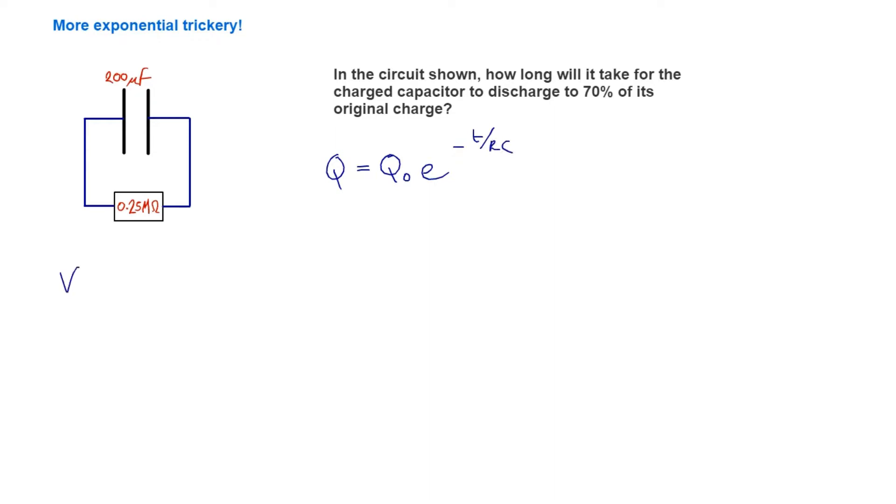If it was potential difference, I would choose V = V₀e^(-t/RC). Or if it was current, I = I₀e^(-t/RC).